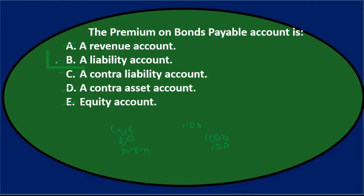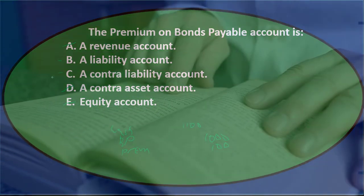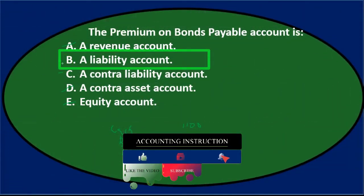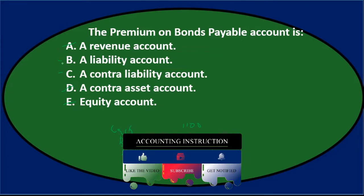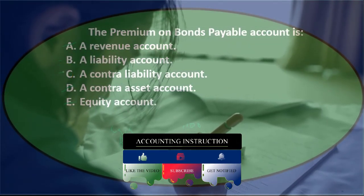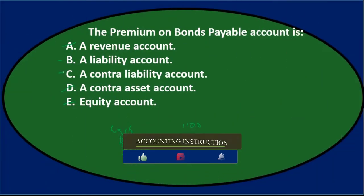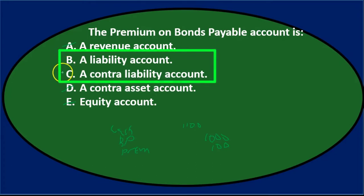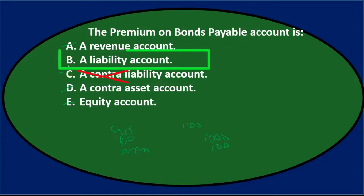We're left with B — a liability account — and C — a contra liability account. Note that C is a subset of B: if something is a contra liability account, it's also a liability account, just a specific type. So if C is true, then B must also be true, and they can't both be true. On the other hand, if B is true, it doesn't necessarily mean C is true — it could be a liability but not a contra liability.